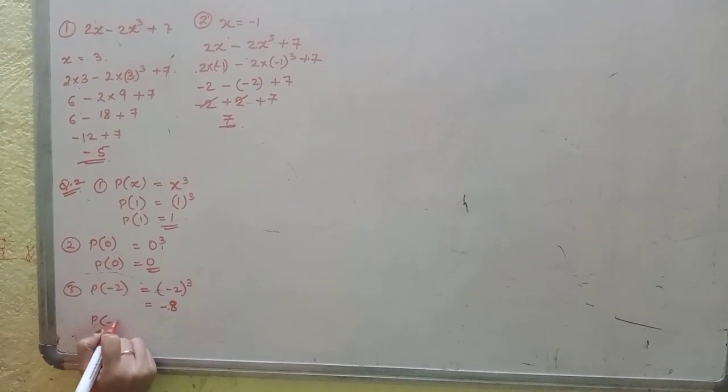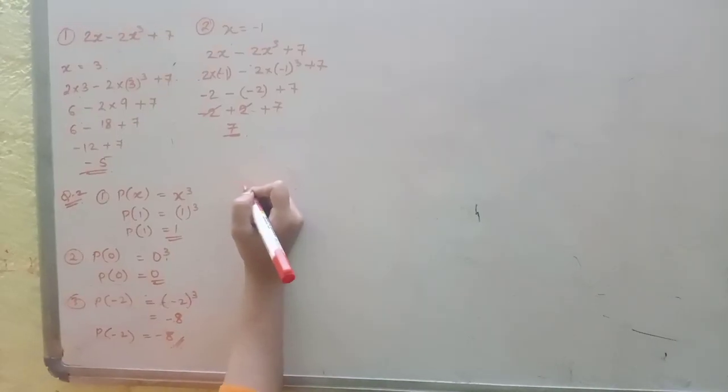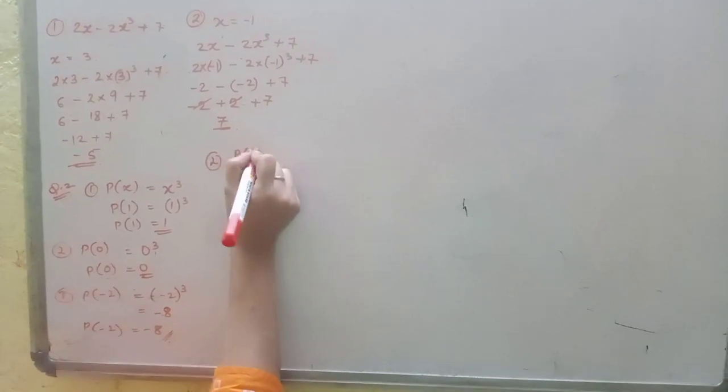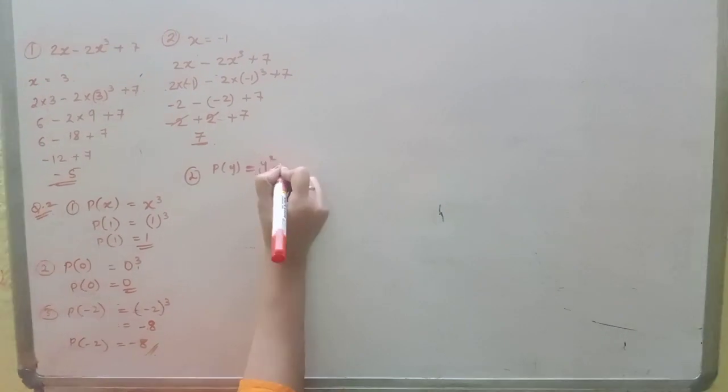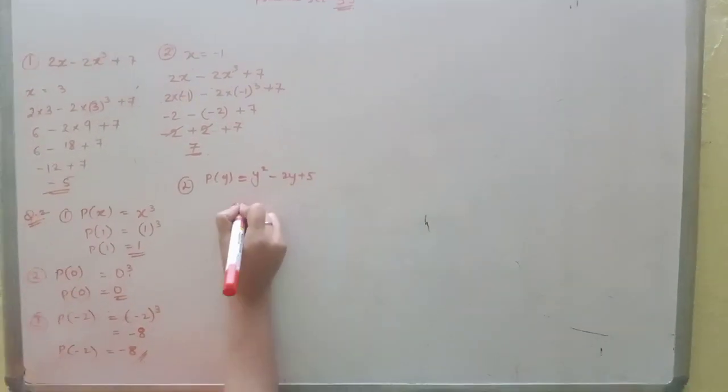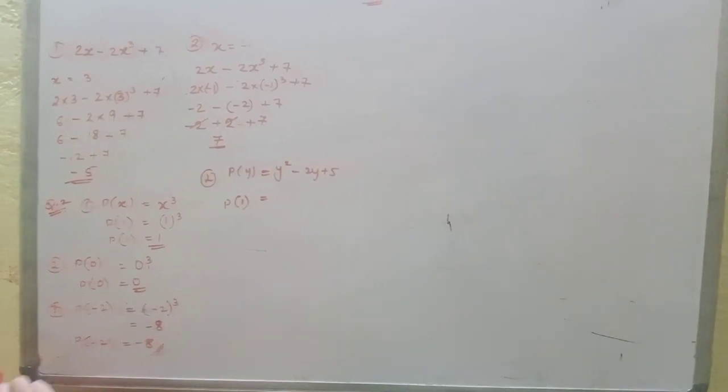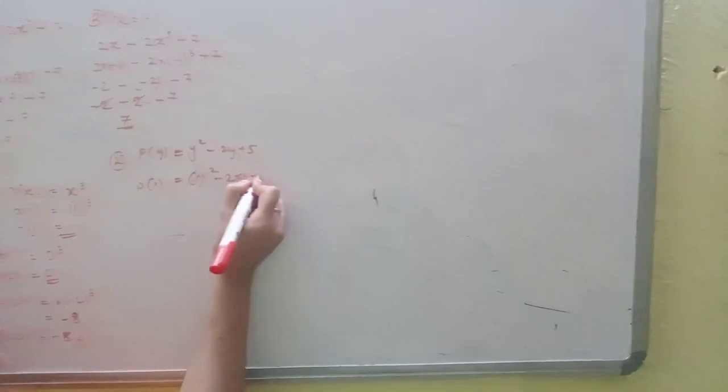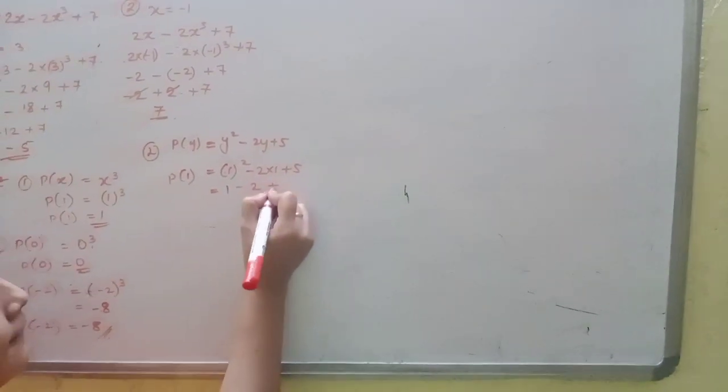Next we have to solve P(y) = y² - 2y + 5. P(1) = 1² - 2 into 1 + 5 = 1 - 2 + 5 = 4.